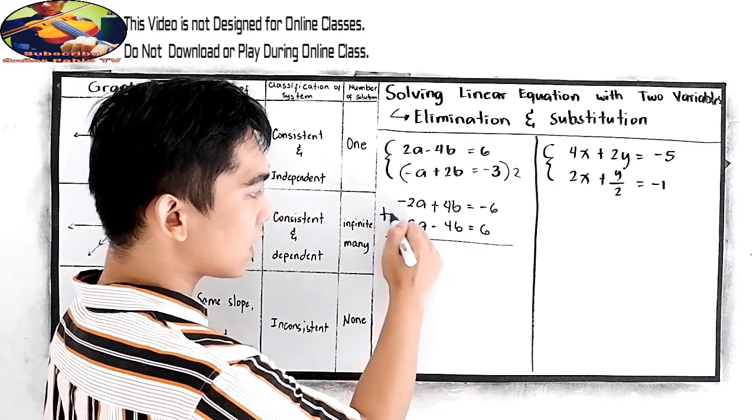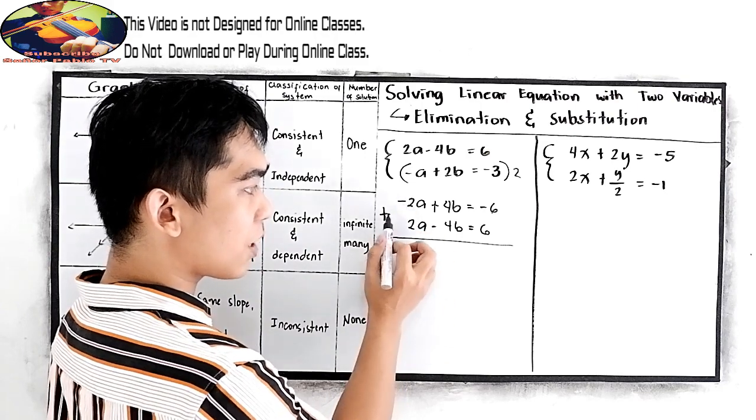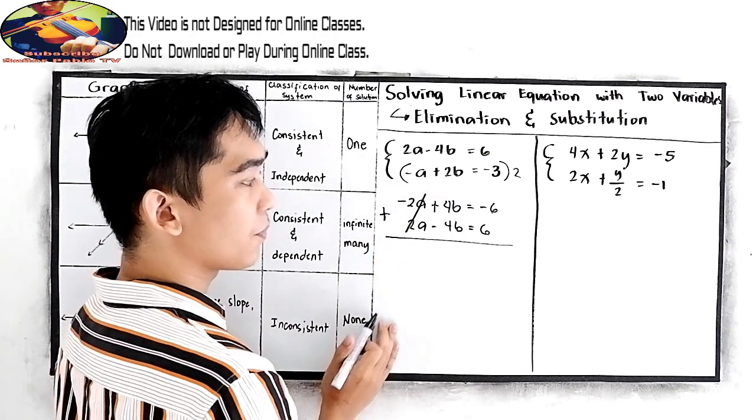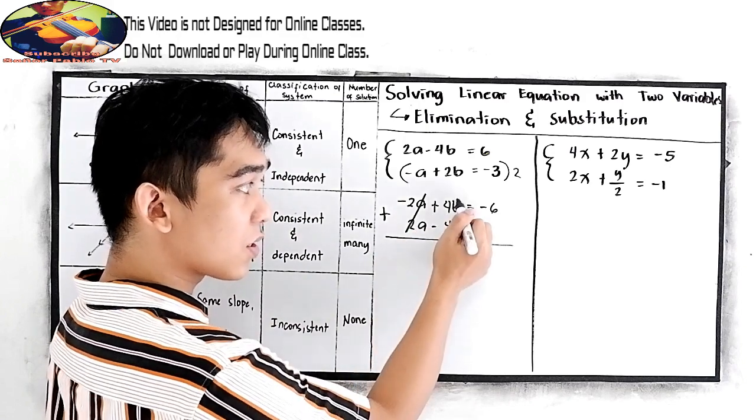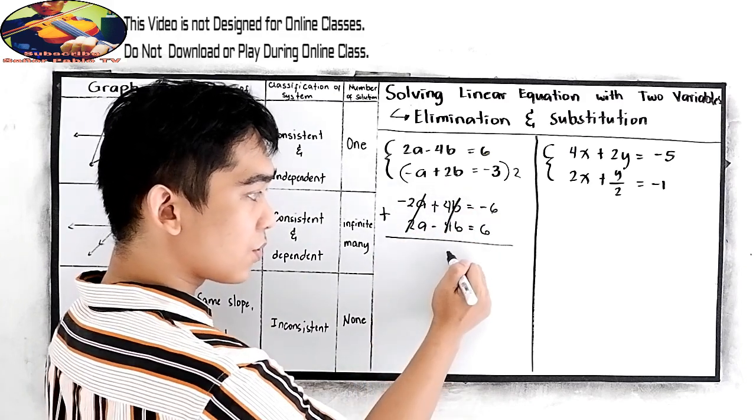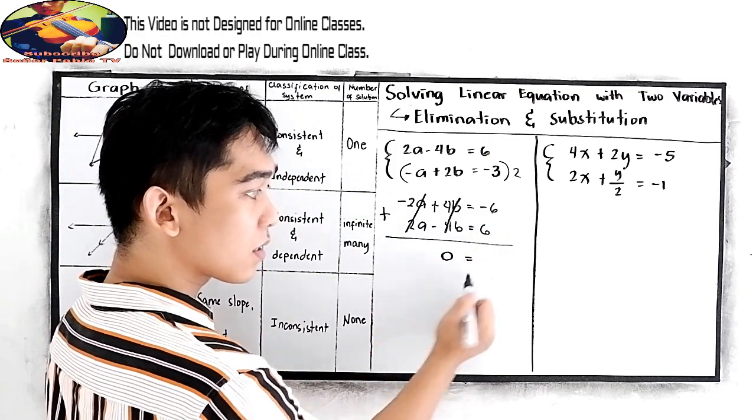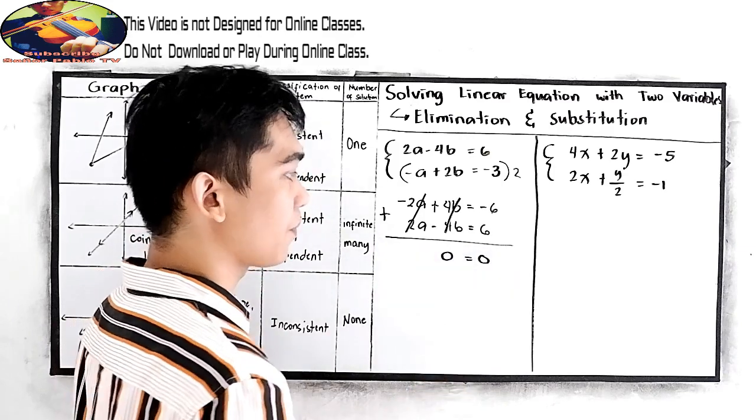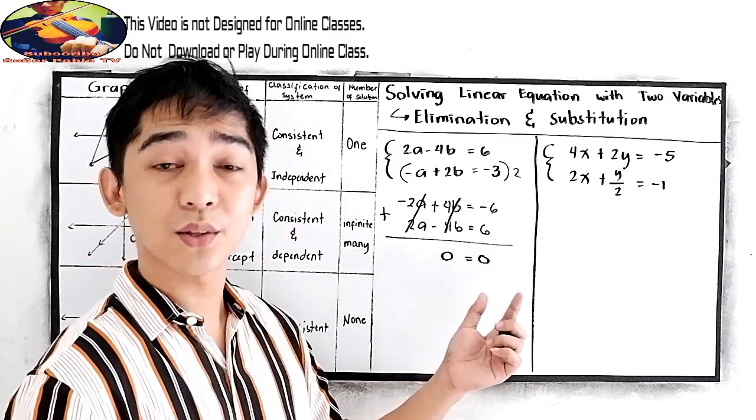And we're going to add. 2a plus negative 2a, this is 0. 4 plus negative 4, this is also 0. So 0 is equal to negative 6 plus 6 must also give us 0. So our equation will give us 0 is equal to 0.